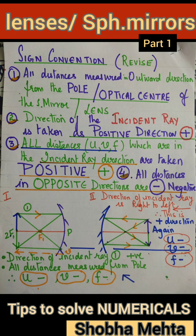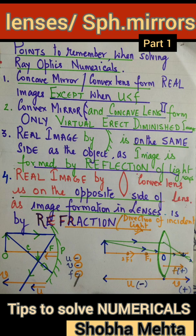Now, in sign conventions, the direction of the incident light rays from the object to the lens or mirror is taken as positive. All distances are measured from the pole or optical center in the outward direction. Therefore, if U, V, and F are along the same direction as the incident ray from the object, these are positive. Study the diagrams.